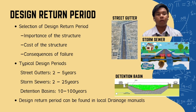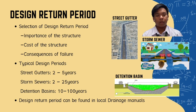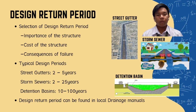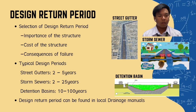Typical design return periods: street gutters have about 2 to 5 years, storm sewers have about 2 to 25 years, and detention basins have 10 to 100 years return period. The design return period can be found in the local drainage manuals.